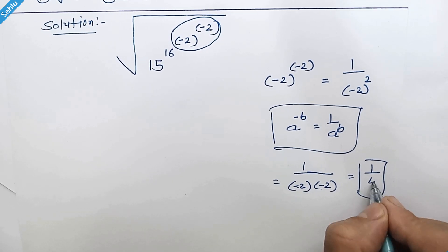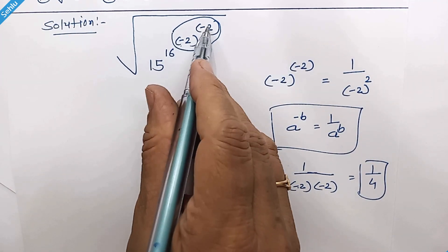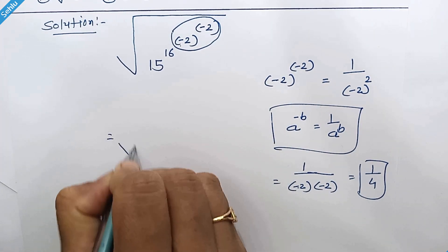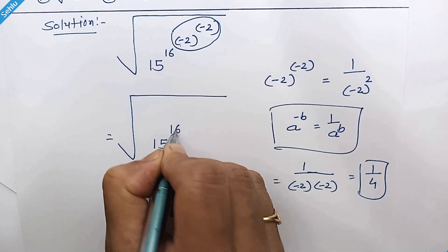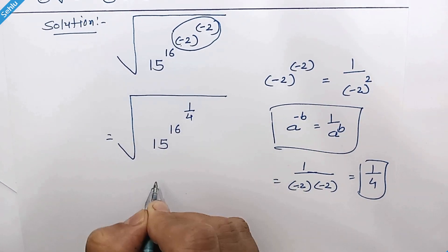Now we will put this instead of negative 2 to the power negative 2. So it will be square root of 15 to the power 16 to the power 1 over 4.